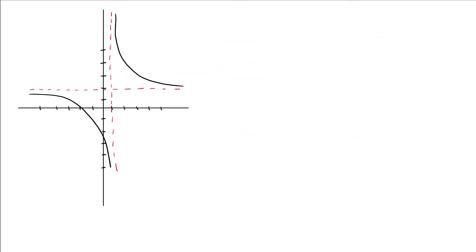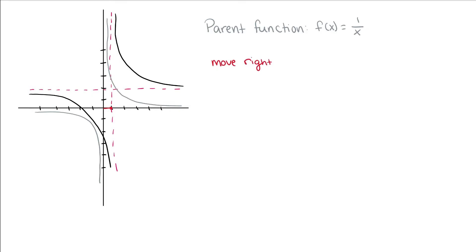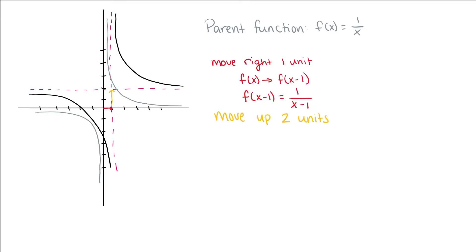Next, we have a function with two asymptotes. It is an odd function, which means this is one of our rational functions, and the parent function is f(x) = 1/x. This function is moved right one unit, so we do x - 1. And then moved up two units, so we add 2 on the outside. Our new function becomes f(x) = 1/(x - 1) + 2.